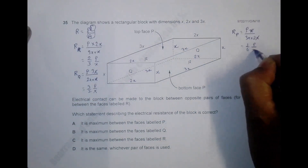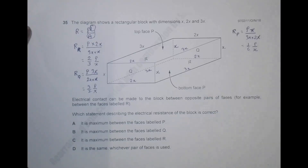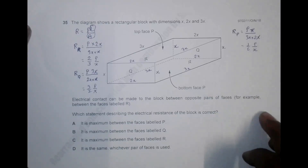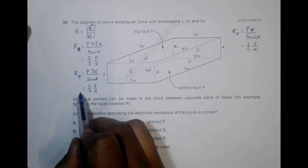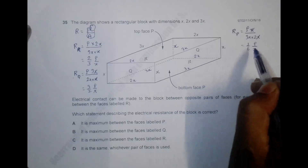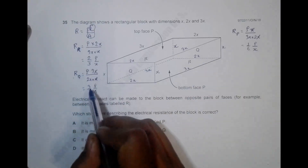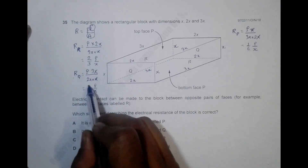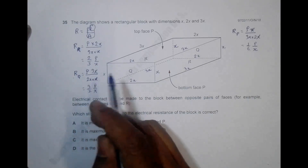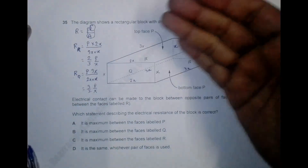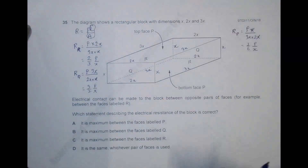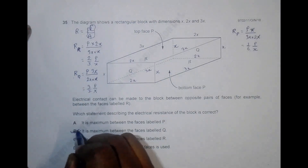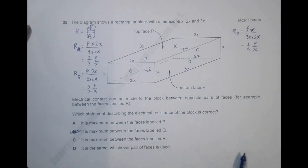Comparing the three results: across P faces it is ρ/6x (smallest), across the first pair it is 2ρ/3x, and across Q faces it is 3ρ/2x (largest, equal to 1.5ρ/x). So the resistance is highest across the Q faces, because the length is greatest and the cross-section is smallest. The correct answer is choice B.